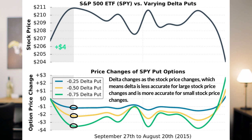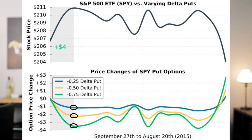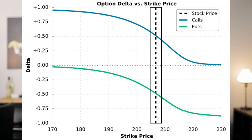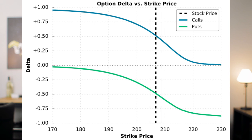The main point is that option deltas are fairly accurate and can be used to estimate option price changes relative to small changes in the stock price. Moving on, let's talk about call option deltas and put option deltas as they relate to where the strike price is relative to the current stock price. In general, put options and call options with strike prices near the stock price will have deltas near 0.50 — for calls that means near positive 0.50, and for puts that means near negative 0.50.